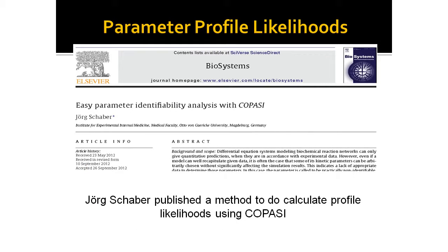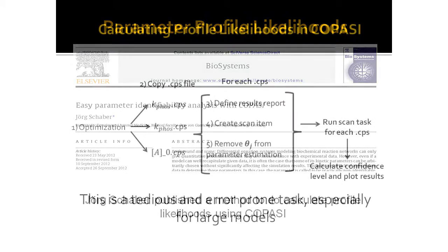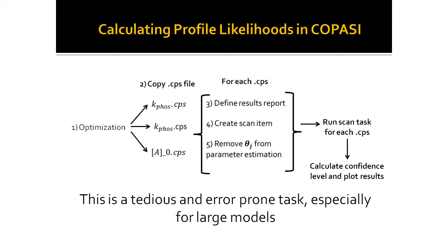In 2012, Jorg Shaba published a method to do this using COPASI. Essentially you perform an optimization, find the parameters you want to minimize, then copy the COPASI file — one for each of your parameters — open each COPASI file, define a report definition to collect your results, create a scan item, remove your parameter of interest from the estimation task, run your scan task, and then visualize the results. This isn't fun. This is a tedious and error-prone process.